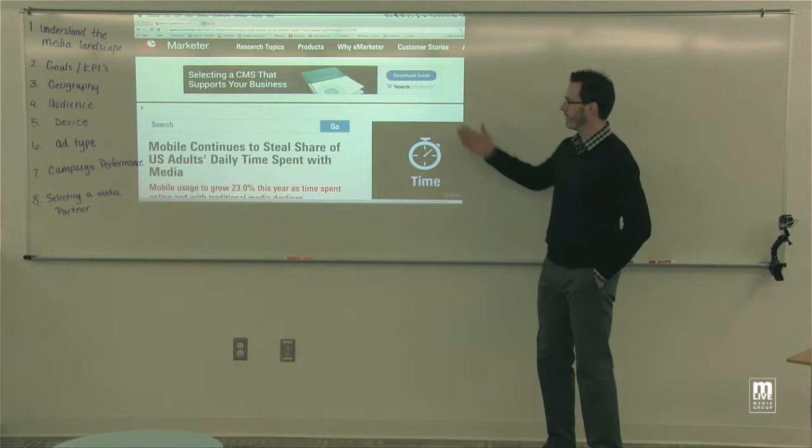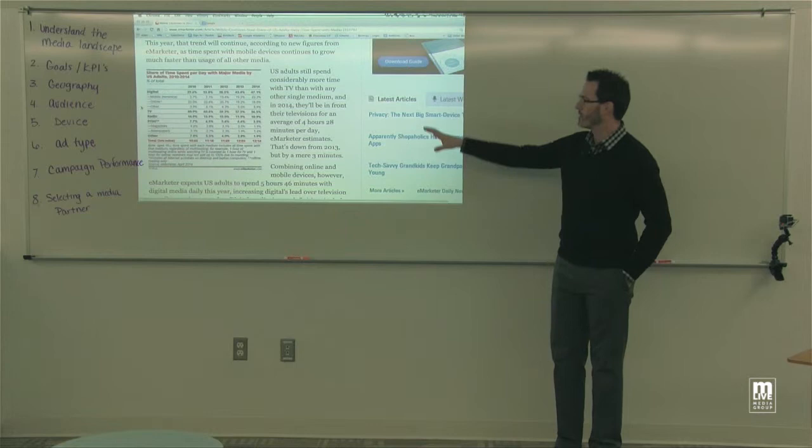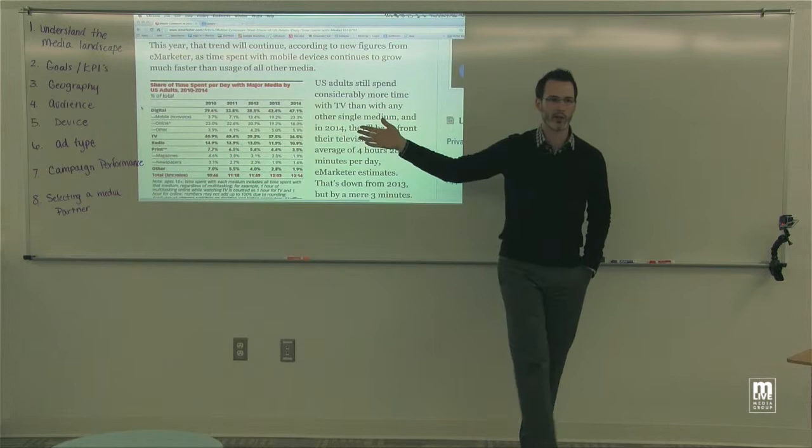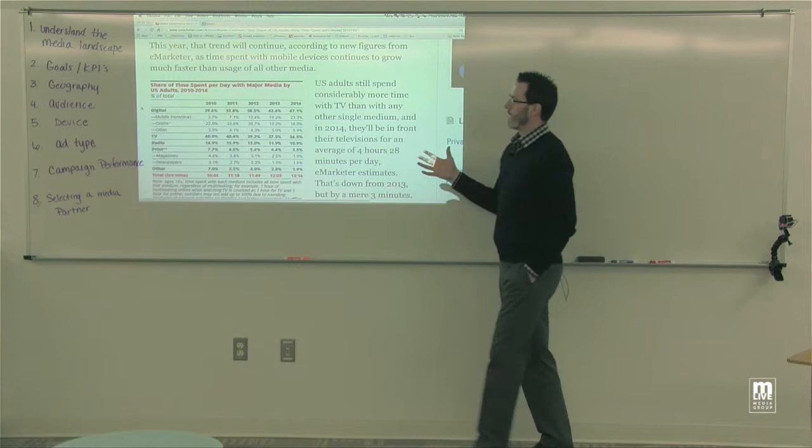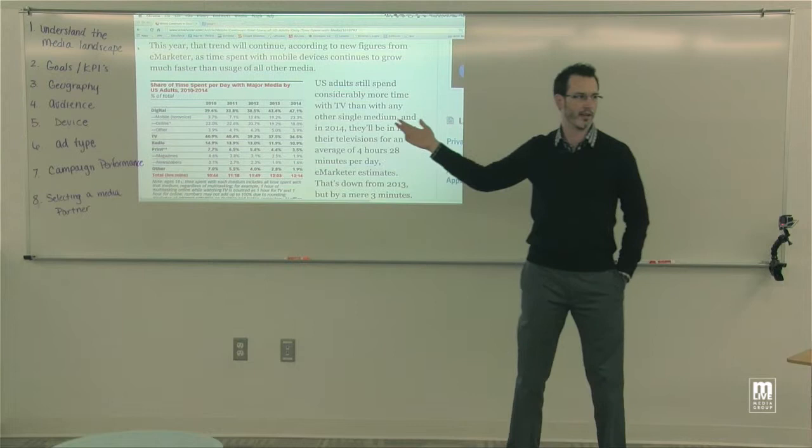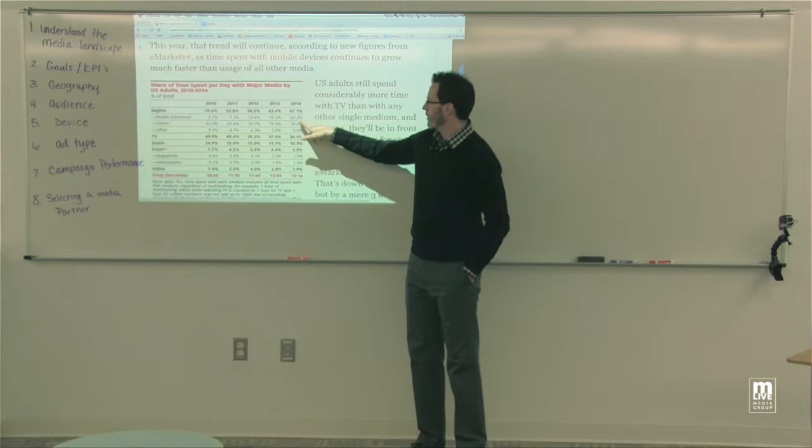If you Google 'time spent with media' and scroll down, there's an eMarketer article. We find eMarketer is pretty credible and gives us good information. It shows you, over the past several years since 2010, how consumers have spent their time with various media. You can see that digital is 47%, TV at 36%, radio right around 11%, and so forth. Digital has grown every single year since 2010 while other media has decreased.